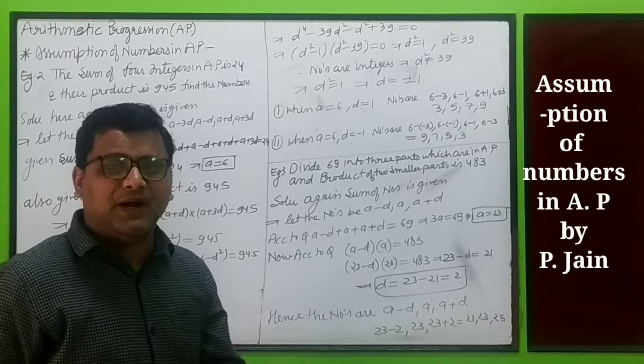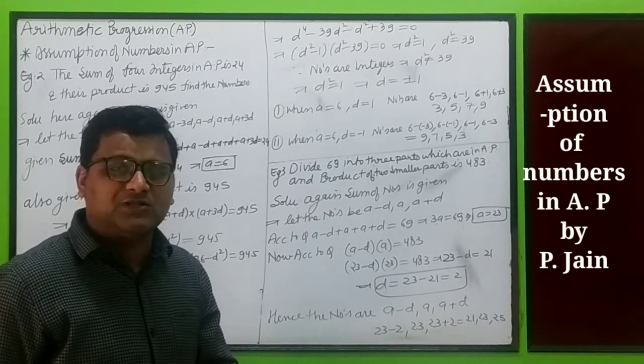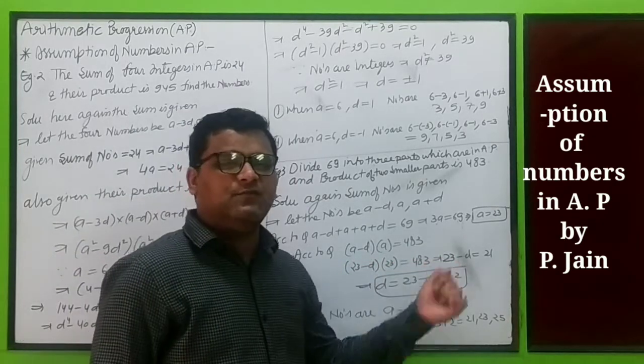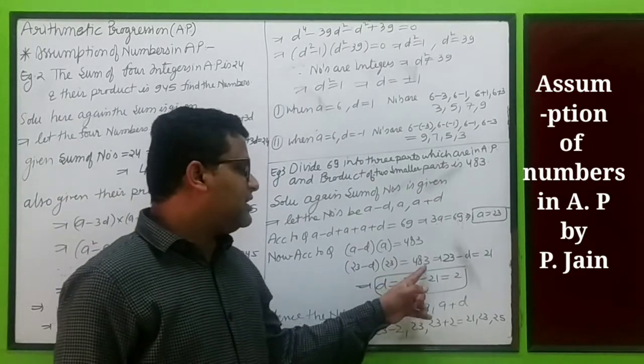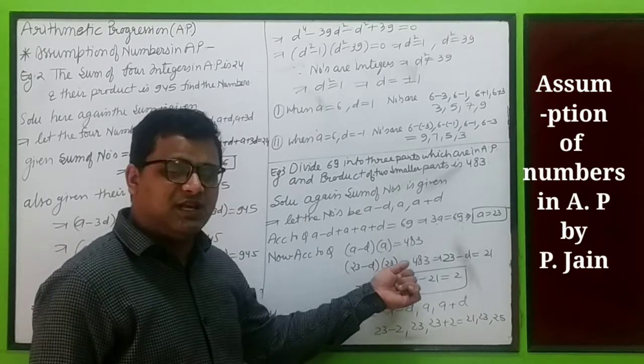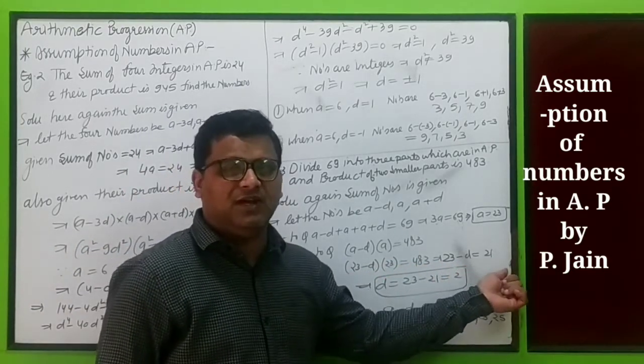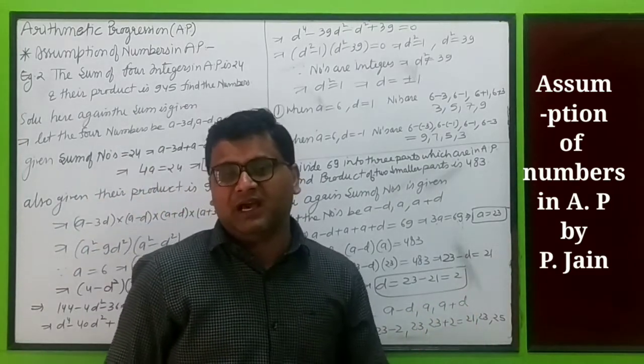Now the product of two smaller parts: the smaller parts are a minus d and a, and their product is 483. Substituting a equals 23: (23 minus d) times 23 equals 483. Dividing by 23 gives 23 minus d equals 21, so d equals 2. Now we have a and d, so we can find the numbers.